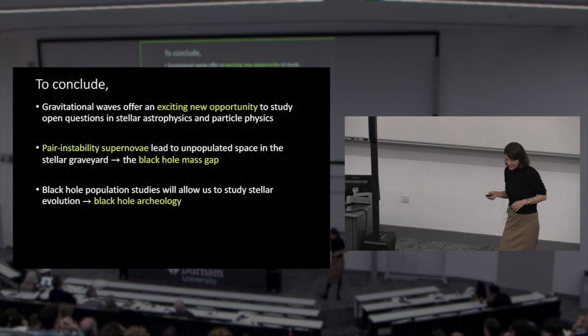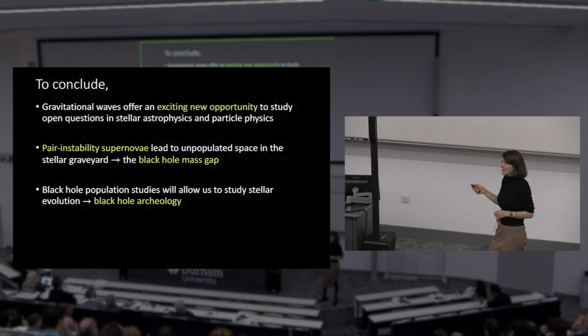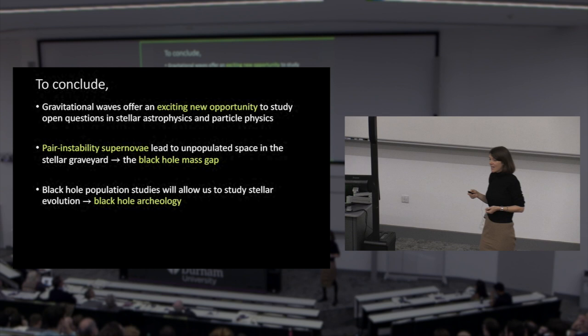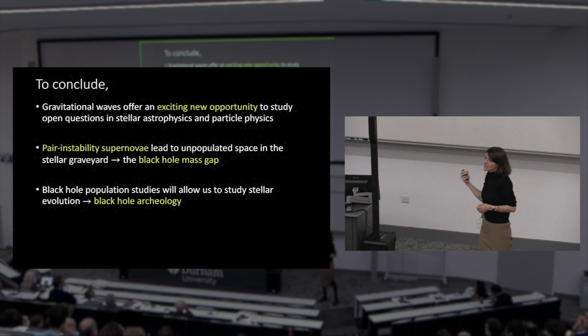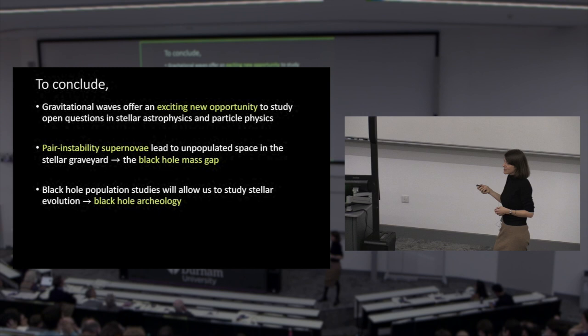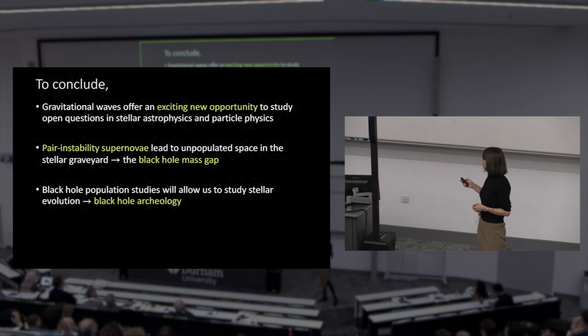To conclude, I think gravitational waves are a really interesting prediction, an exciting new opportunity in the next coming decade to study many questions, including if Einstein was right. Pair instability supernovae lead to this unpopulated region in the black hole mass space, in the stellar graveyard if you will, and that's the black hole mass gap. Black hole population studies will allow us to study stellar evolution, including fundamental questions about particle physics. So I call this black hole archaeology. Thank you very much. Please ask me if you'd like afterwards.